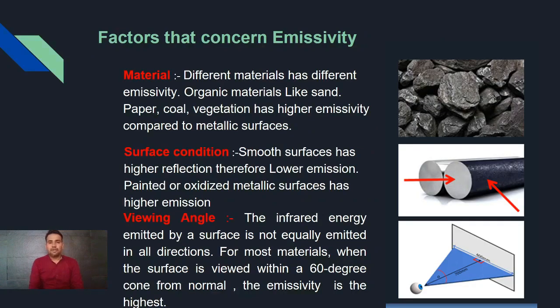What are the different factors concerning emissivity? One is the material. Different material has different emissivity, whether metal or non-metal, depending on that. And then the surface condition. If shiny surface is there, it has high emissivity. And if oxides and painted surface is there, it has different emissivity. Then the different angles, viewing angle has different emissivity. The 60 degree cone, you can see from normal, the emissivity is the highest.